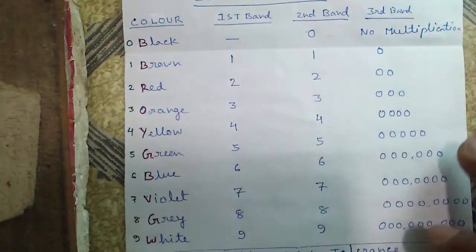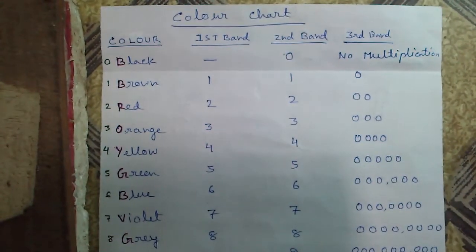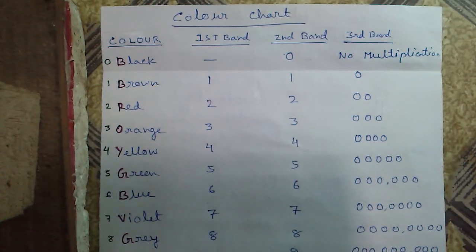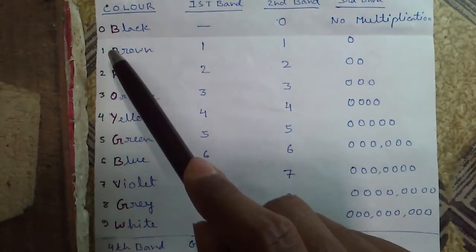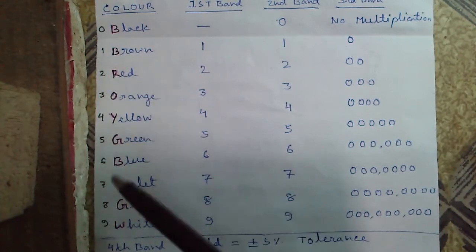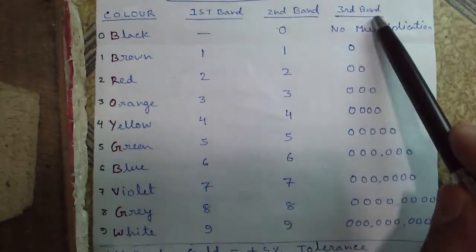Now I will tell you about the color coding chart in detail. The first three colors on a resistance denote its resistance value, and the fourth color denotes its tolerance. Every color has two values: its default value and its positional value. Black has a default value of 0, brown 1, red 2, and similarly up to white which is 9.